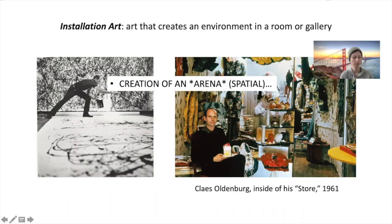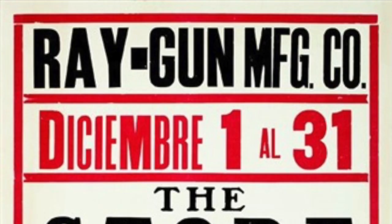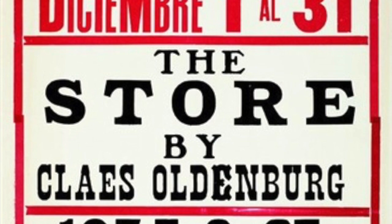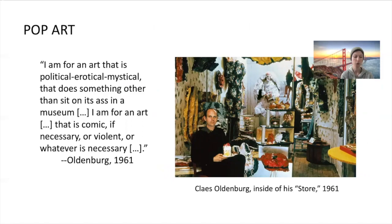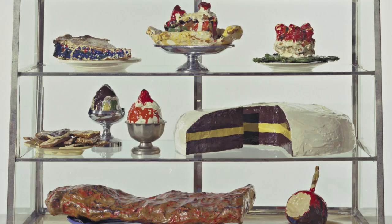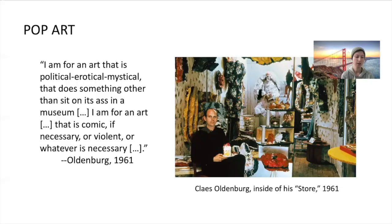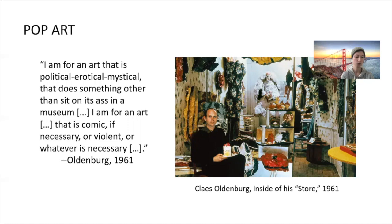Oldenburg was also known for his installation art. Installation art is art that creates an environment in a room or a gallery. It takes from abstract expressionism the interest in the spatial aspect, moving art beyond the confines of a painting hung on the wall or a sculpture on a pedestal, and instead making it into a whole environment. Claes Oldenburg's Store is an example of a pop art installation. In the winter of 1961, Oldenburg opened a storefront on the Lower East Side of Manhattan and sold his work there. Among the unusual and eclectic things on sale were sculptures of undergarments and slices of blueberry pie, among other pastries — everything, however, was made out of plaster. This reflects his statement that he is for an art that is political, erotical, mystical, that does something other than sit on its ass in a museum — and that art should be comic, if necessary, or violent, or whatever is necessary.